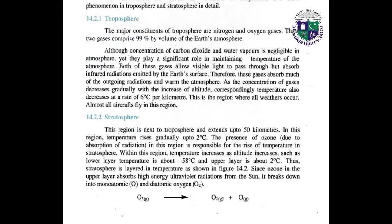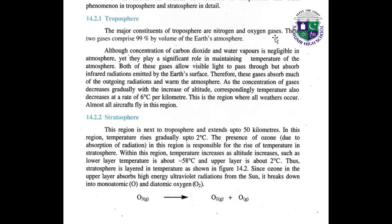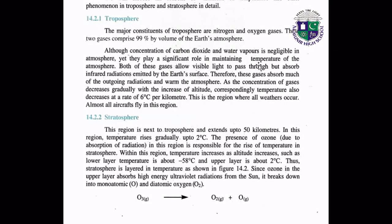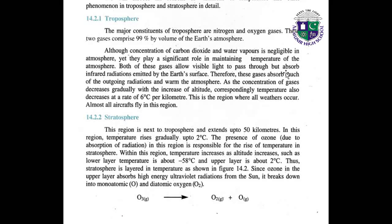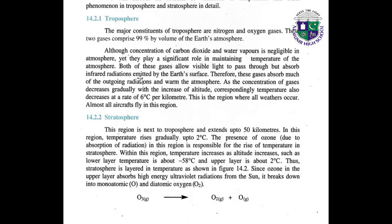Troposphere. The major constituents of the troposphere are nitrogen and oxygen gases. These two gases comprise 99% by volume of the earth's atmosphere. Although the concentration of carbon dioxide and water vapors is negligible in the atmosphere, they play a significant role in maintaining the temperature of the atmosphere. Both of these gases allow visible light to pass through but absorb infrared radiations emitted by the earth's surface. These gases absorb much of the outgoing radiations and warm the atmosphere, as the concentration of gases decreases gradually with the increase of altitude.